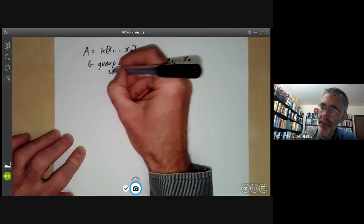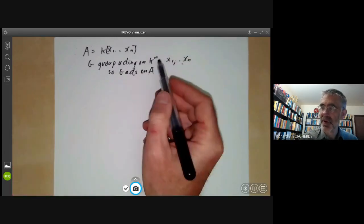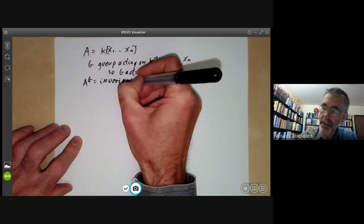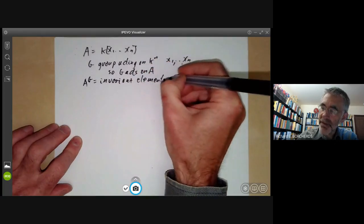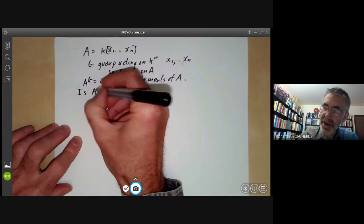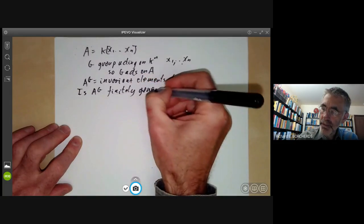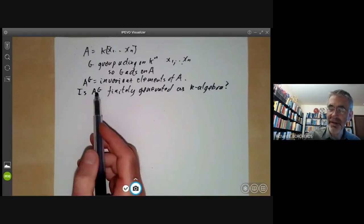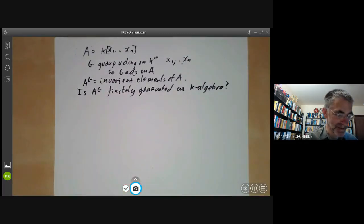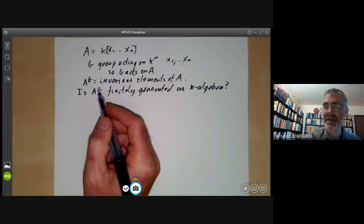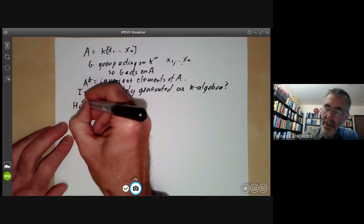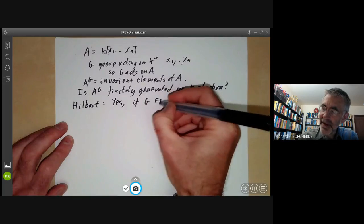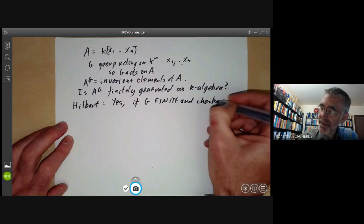So G acts on A, because A is just polynomials over this vector space here. And we look at A^G, which is the invariant elements of the ring A. And we can ask, is A^G finitely generated as a k-algebra? Can we find a finite number of invariant elements such that all invariant elements can be expressed in terms of them? Sometimes it is and sometimes it depends a bit on what the group is. So we're going to prove Hilbert's Theorem. This is finitely generated if G is finite and the characteristic of k is equal to zero.